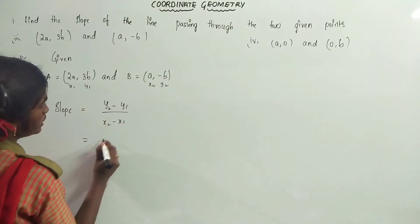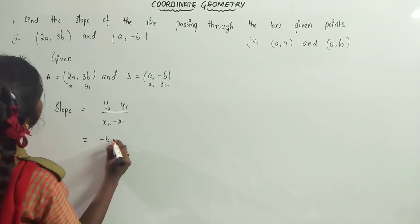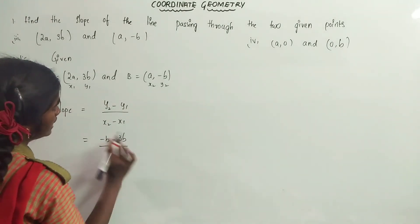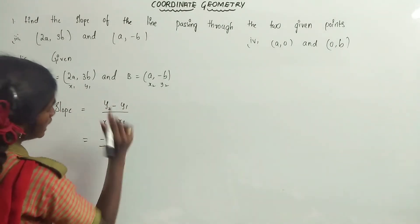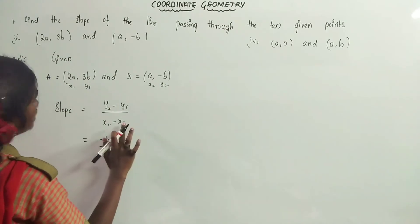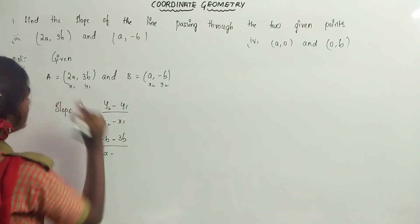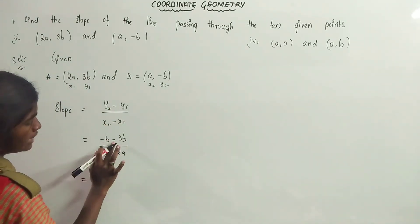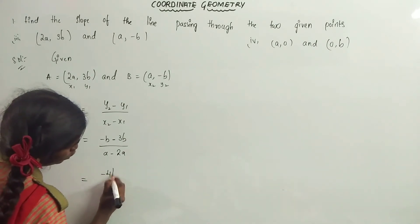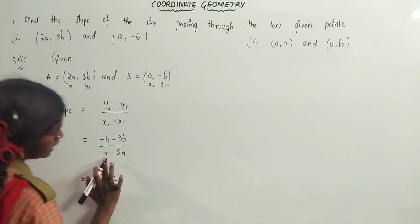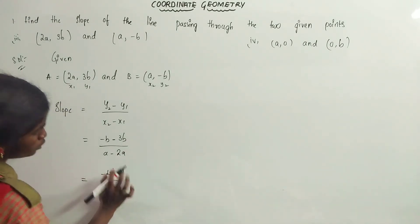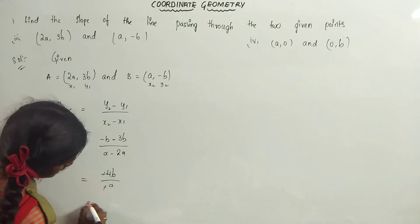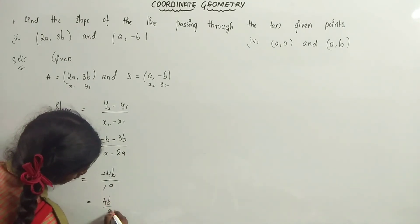y2 is equal to -b, minus y1 is equal to 3b, by x2 is equal to a, minus x1 is equal to 2a. So we get -b minus 3b equals -4b, by a minus 2a equals -a. Here minus and minus get cancelled, giving 4b by a.